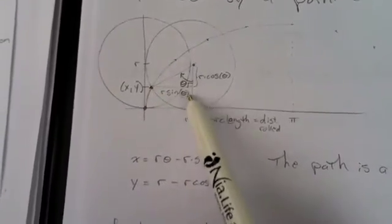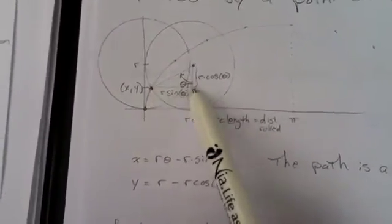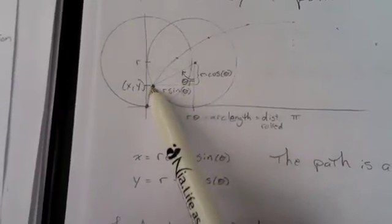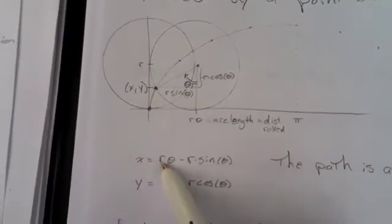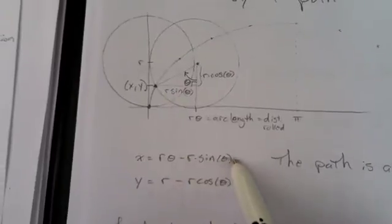And to get this x-coordinate there, I just need to back up. How far? Well, I need to back up r sine theta. So that means the x-distance is r theta minus r sine theta.